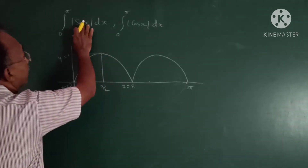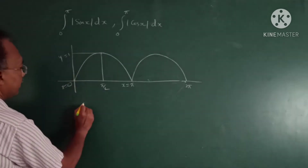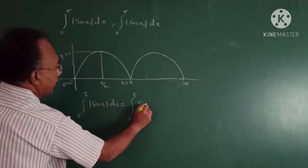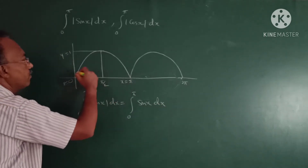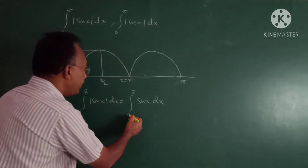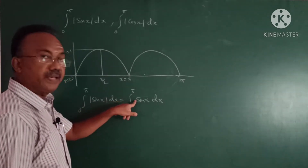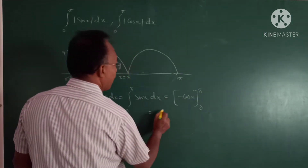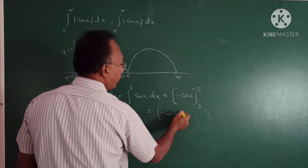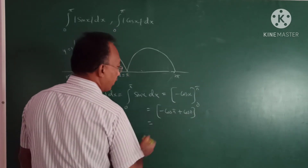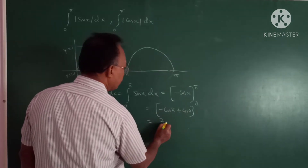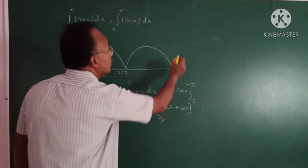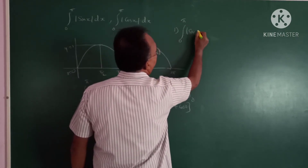The formula: integral of modulus sin x from 0 to π. Modulus sin x from 0 to π is positive, so it equals integral of sin x from 0 to π, which gives minus cos x. Upper limit: minus cos π = minus(−1) = 1. Lower limit: minus cos 0 = −1. So the answer is 1 plus 1 = 2. The integral of modulus sin x dx from 0 to π equals 2.